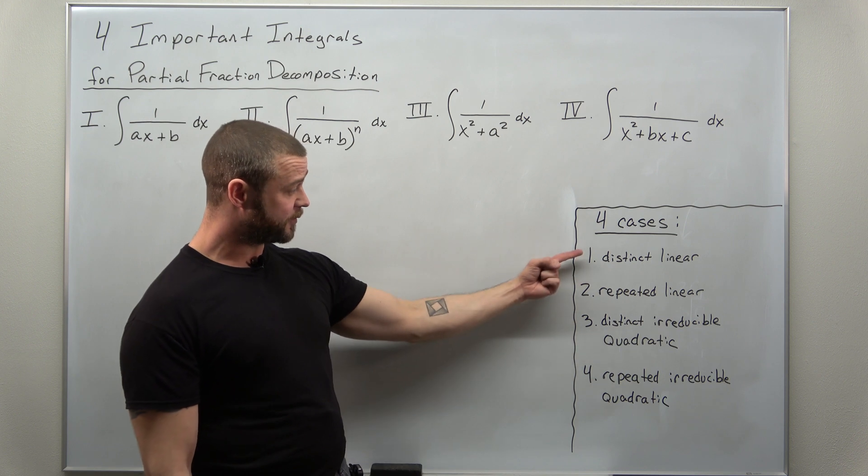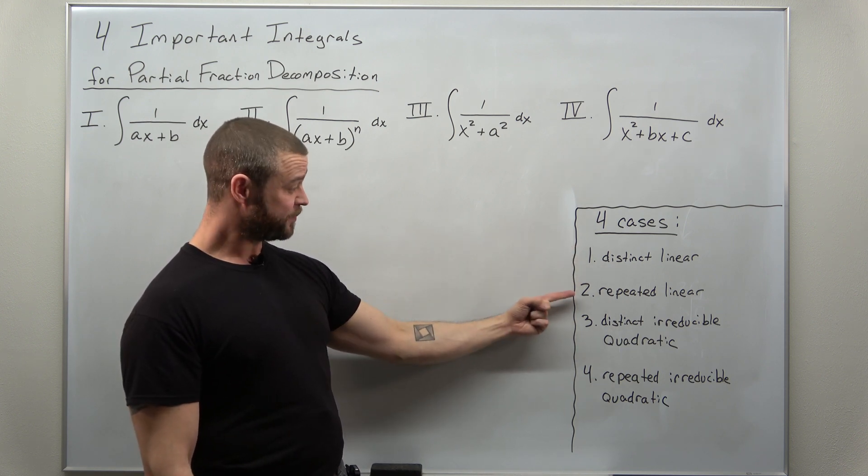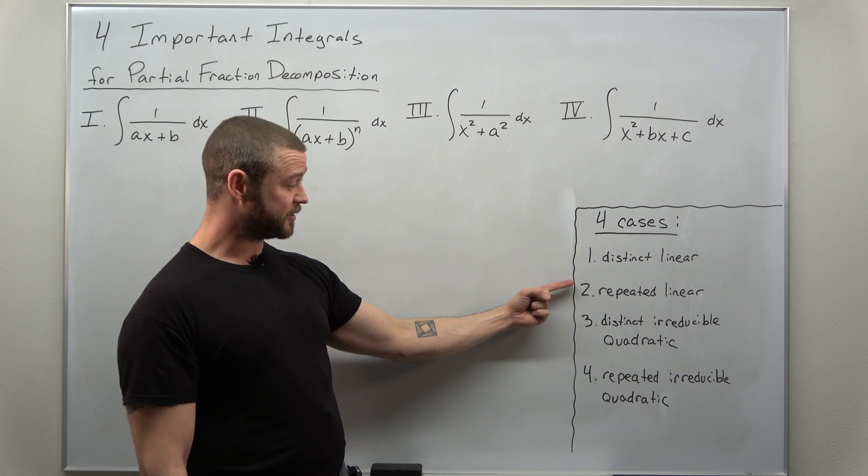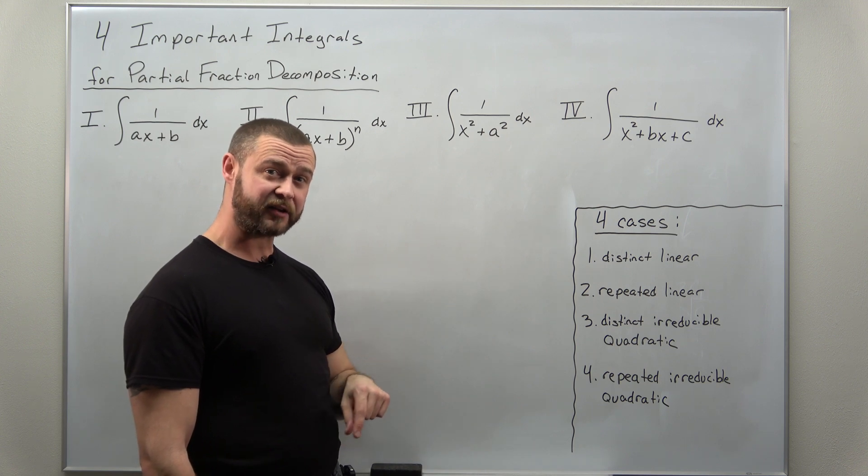Your denominators could involve distinct linear factors. That's the easiest case. Repeated linear factors. Next, distinct irreducible quadratic factors.